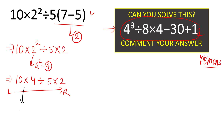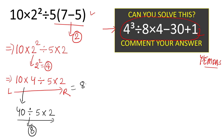Going left to right, we first solve 10 times 4, which equals 40. Then 40 divided by 5, which gives 8. Finally, 8 times 2 equals 16. So for question number 1, the answer is 16.